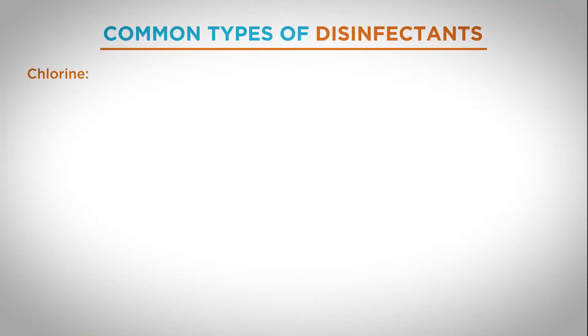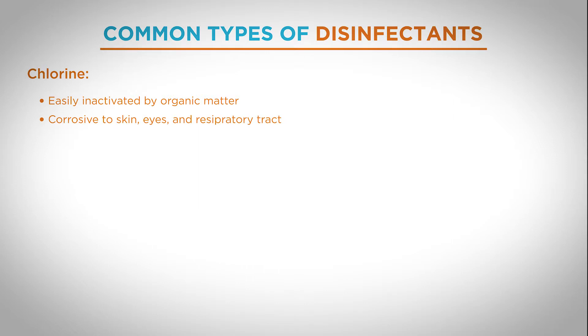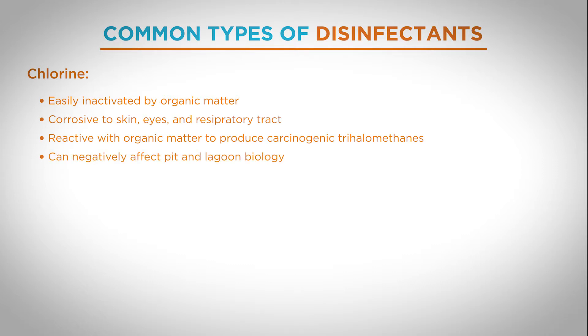Another type of disinfectant active is chlorine. Chlorine has been known for hundreds of years as a good disinfectant. There are many manifestations of chlorine in the marketplace, from liquid solutions of chlorine bleach to chlorine powder to compounds that act as precursors for chlorine. Chlorine is easily inactivated by organic matter, and it is highly corrosive to skin, eyes, and the respiratory tract. Its reaction with organic matter produces carcinogenic trihalomethanes, and chlorine can also negatively affect pit and lagoon biology. Chlorine also has very poor stability and therefore a very short shelf life.